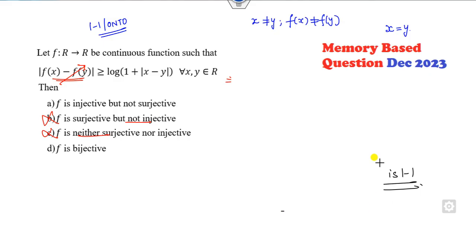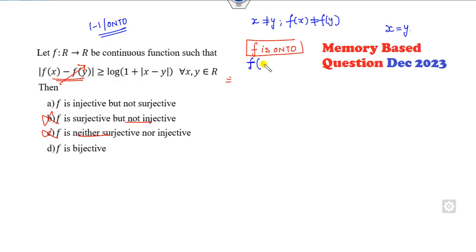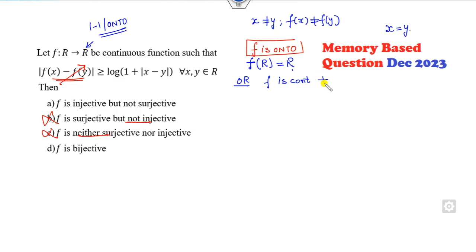Now the target is to prove whether F is onto or not. To prove F from R to R is onto, one way is to choose any Y from the codomain and check whether F(R) equals R. Another approach: since F is given to be continuous, if you prove it is monotonically increasing or monotonically decreasing, that helps.